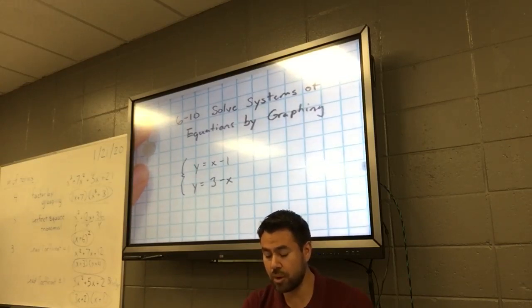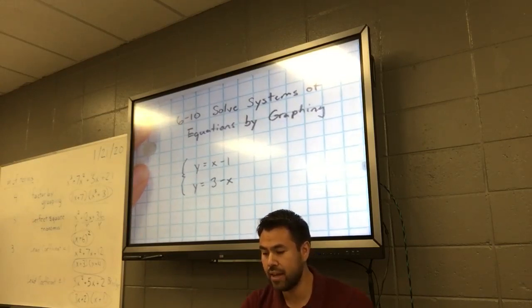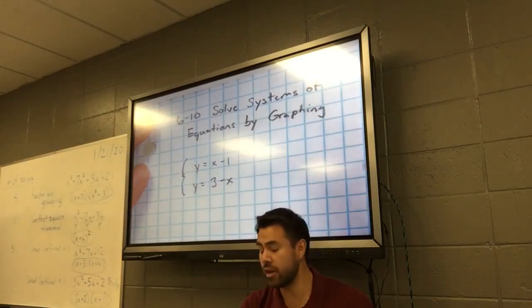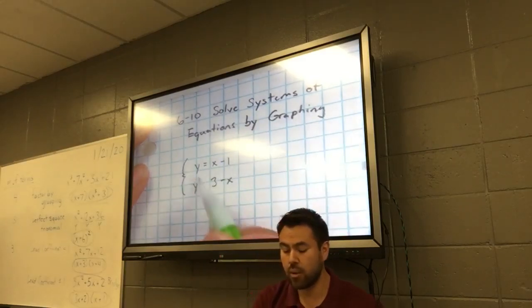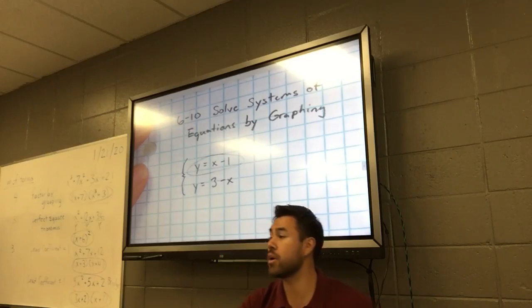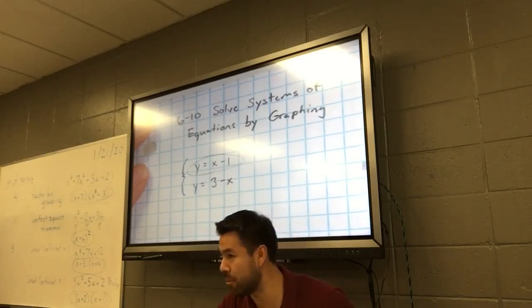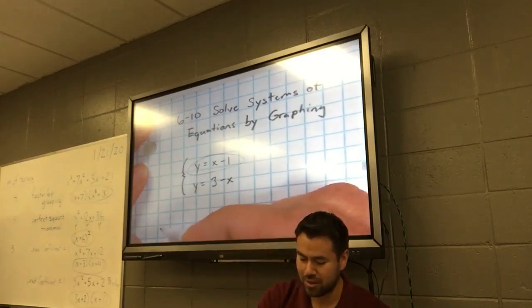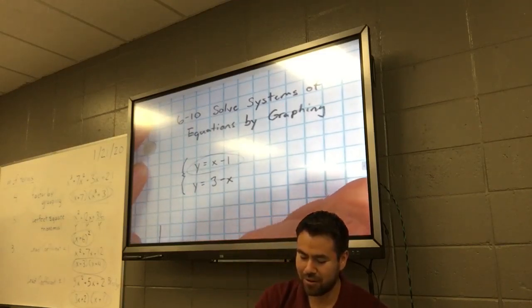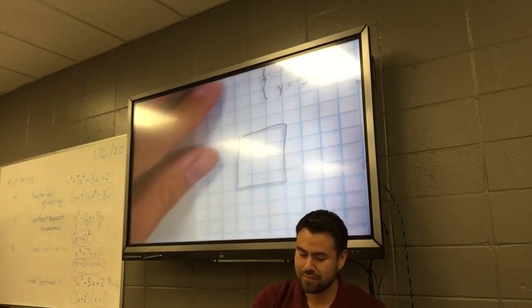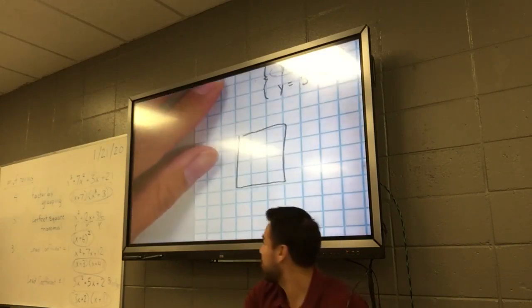We're going to do it three ways. We're going to do one using a table for each equation. What I want us to do is focus on the top equation and make a table. Here's how my table looks — put a little table right there.